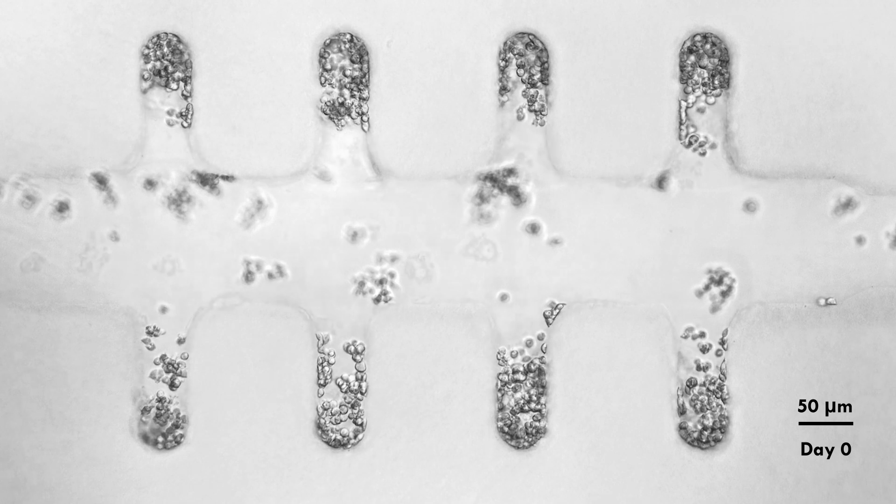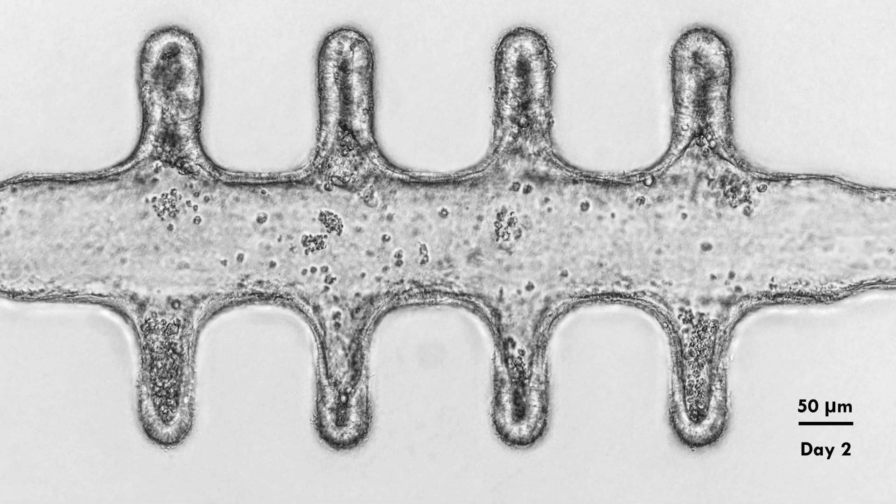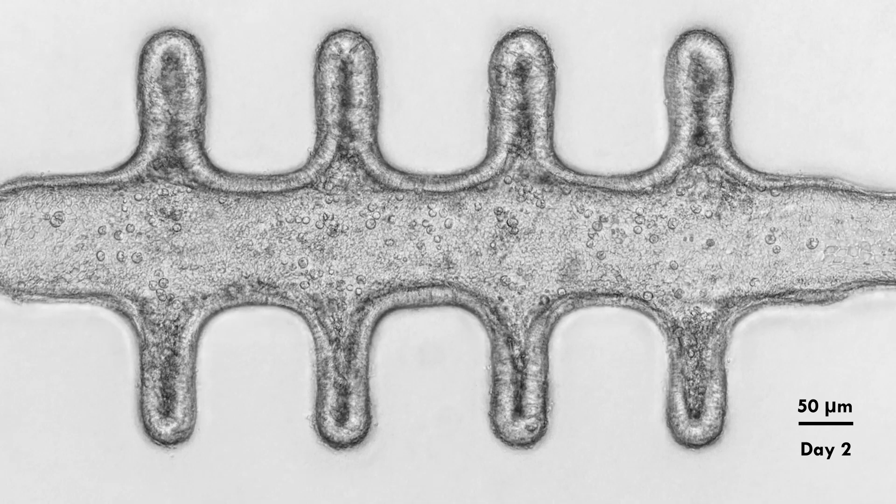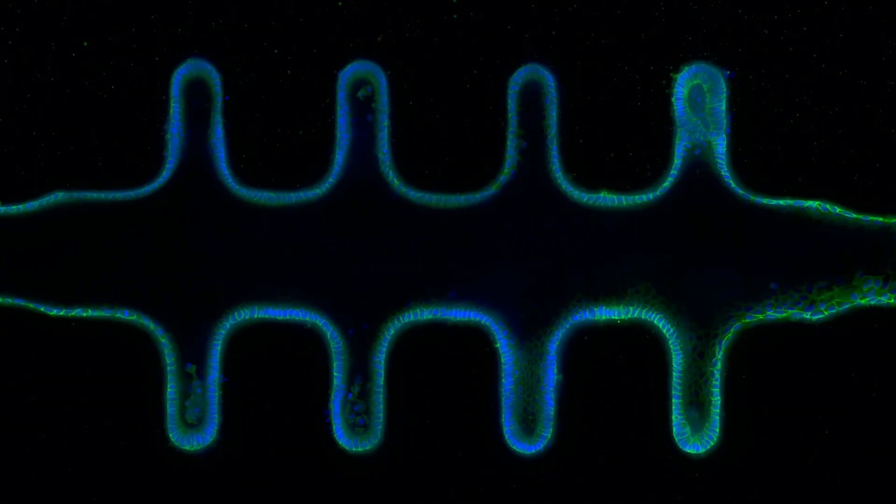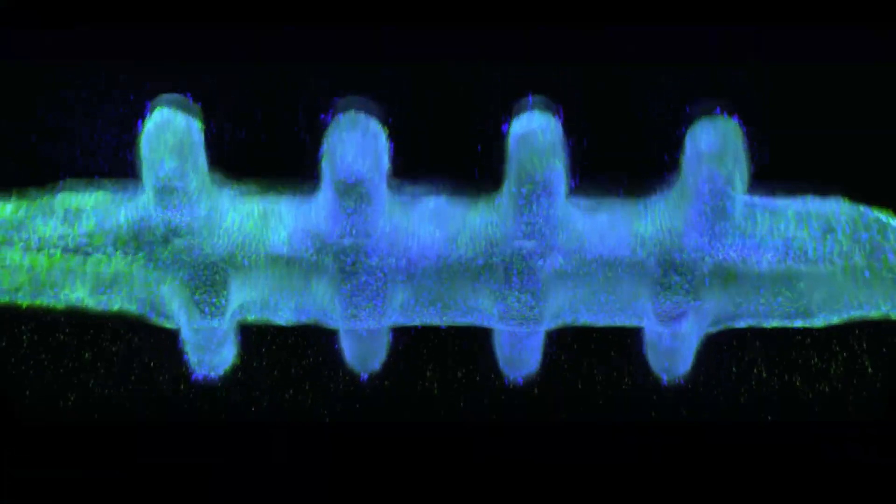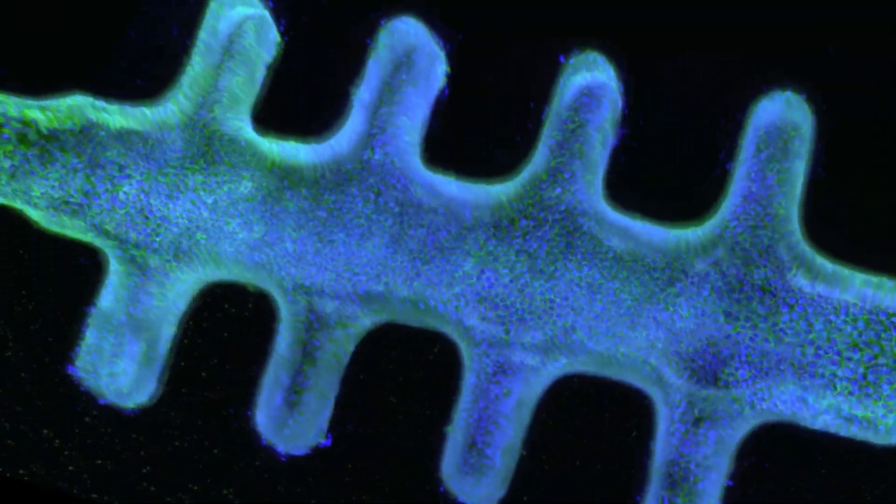Once seeded into the channel, stem cells spread across the scaffold, forming a continuous intestinal epithelium. Fluorescence microscopy shows an openly accessible lumen and the characteristic arrangement of crypts and villus-like domains.